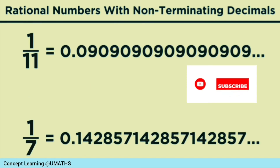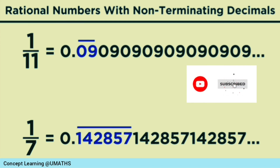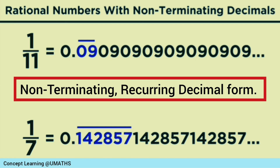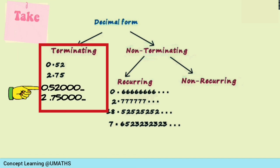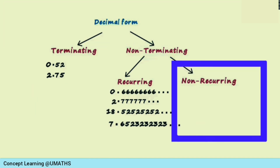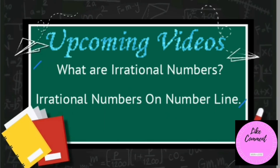In some cases, a group of digits such as 1 4 2 8 5 7 repeats. The process is unending — either a single digit or a group of digits is repeated. Such a decimal form of a rational number is called a non-terminating recurring decimal form. Note: a terminating decimal form can be written as a non-terminating recurring decimal form by adding zeros. We will understand non-recurring decimals in the upcoming video.